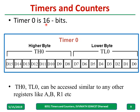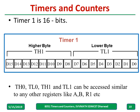Timer 0 has a higher byte and a lower byte: TL0 is the lower byte and TH0 is the higher byte — together 16 bits. You can access either the upper or lower 8-bit portion. TH0 and TL0 can be accessed the same way you access the A register, B register, or R1 register. Similarly, Timer 1 has TL1 and TH1, accessed in the same manner.